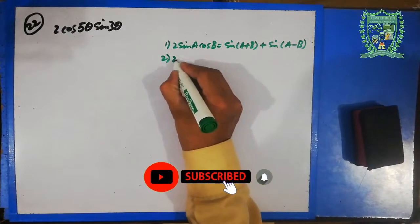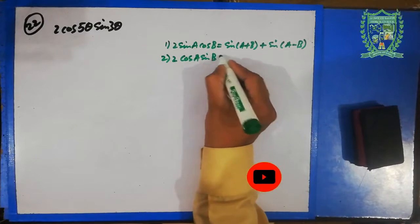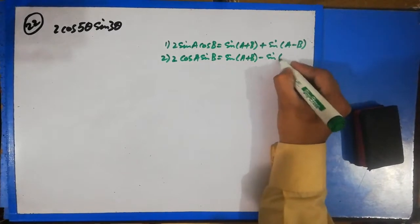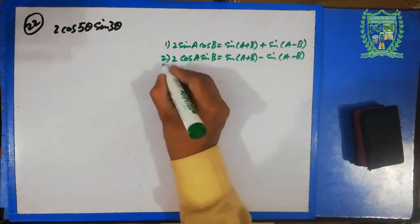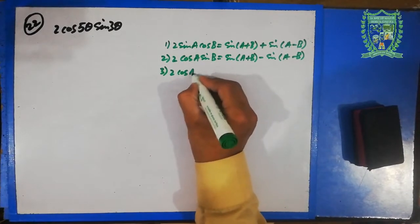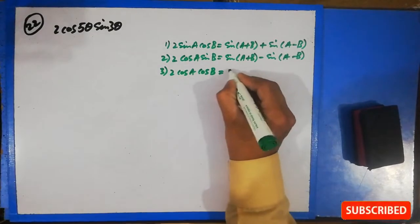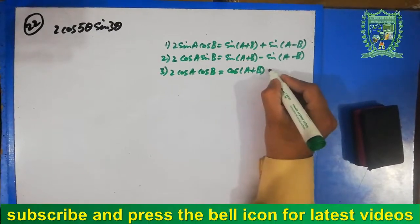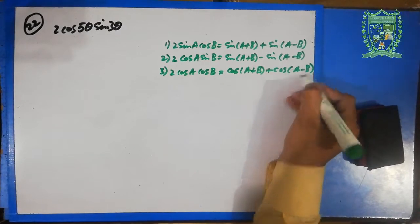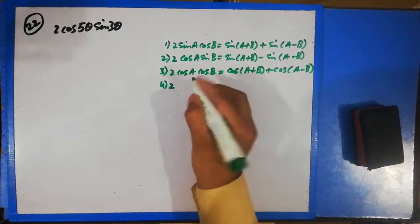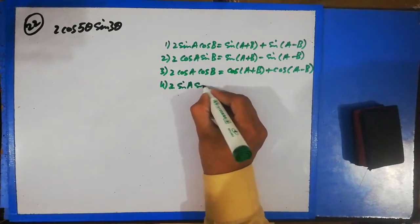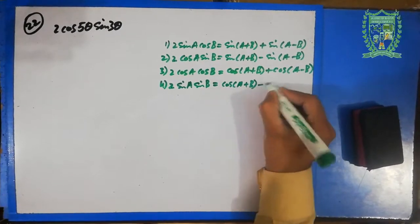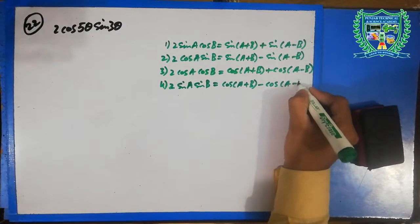The second formula is: 2cosA · sinB = sin(A+B) − sin(A−B). The third formula is: 2cosA · cosB = cos(A+B) + cos(A−B). The fourth formula is: 2sinA · sinB = cos(A+B) − cos(A−B).